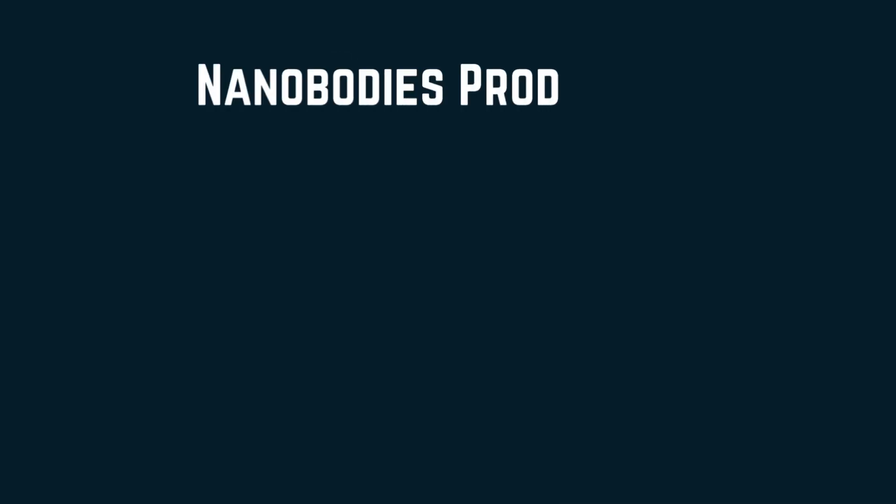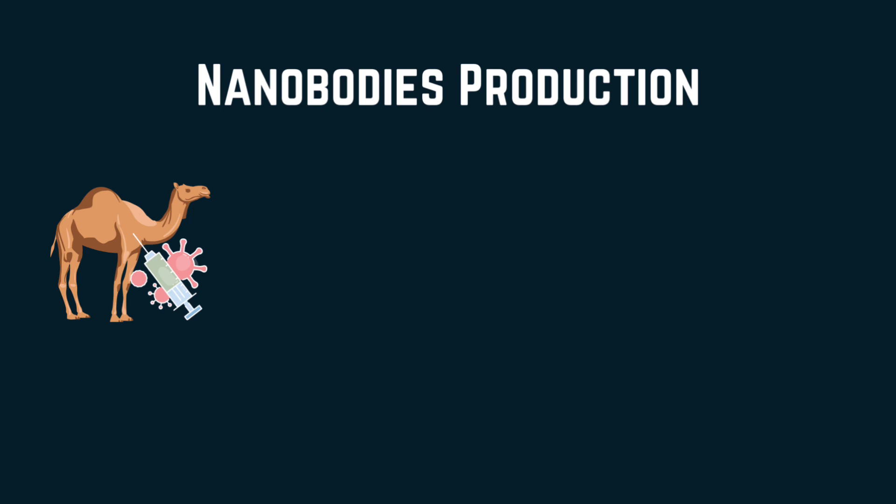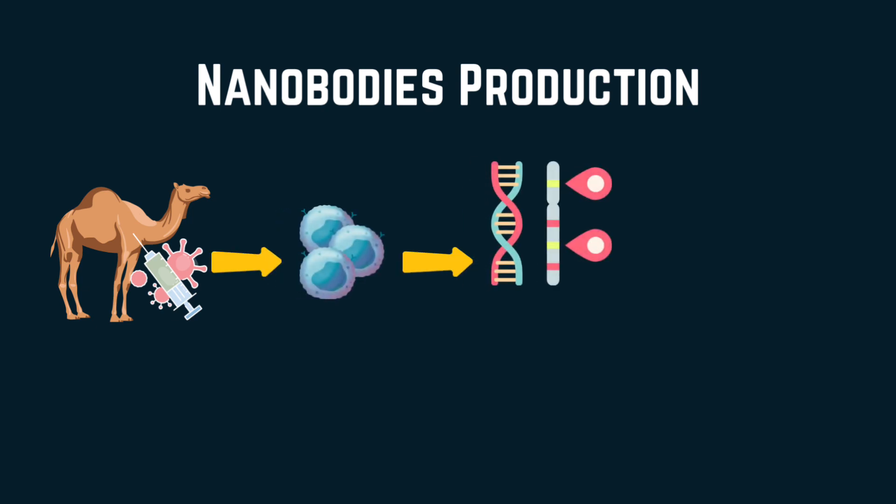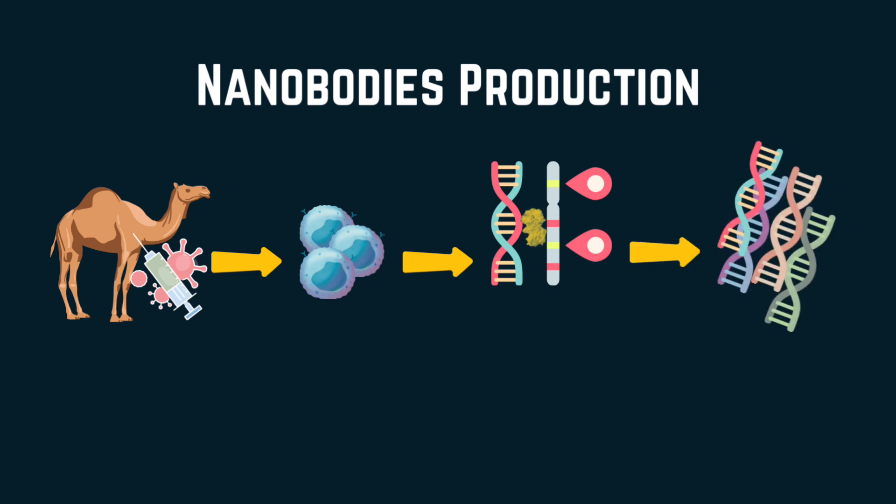To produce nanobodies, camelids will be immunized with targeted antigens, then their B-cells will be isolated. Genes that encode single-domain antibodies will be extracted and used in phage display libraries. Here, the genes expressing nanobodies with highest affinity to targeted antigens will be selected and produced using bacterial, yeast, or mammalian cell systems, making production cost-effective and scalable.